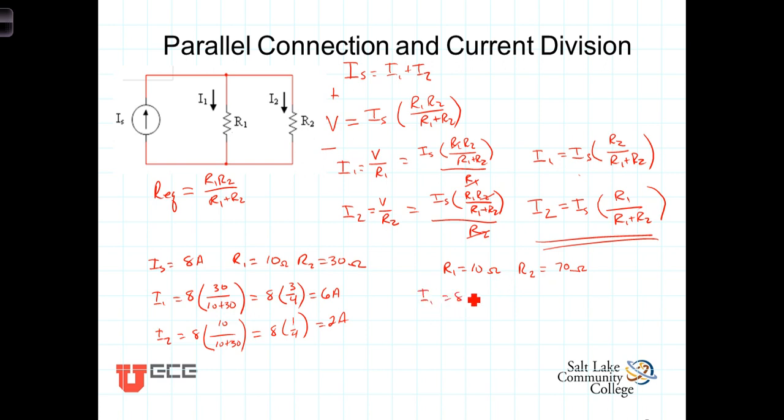I1 is going to equal 8 times R2, which is 70 ohms, over 10 plus 70. That's equal to 8 times 7 eighths, which equals 7 amps.